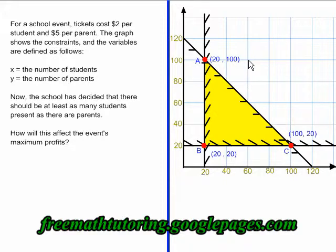The first thing you have to do is define the optimization function. If tickets cost $2 per student and $5 per parent, and students are X and parents are Y, then the optimization function is 2X plus 5Y equals Z.